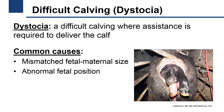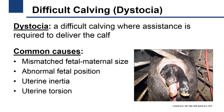Additional causes include an abnormal position of the calf, which is more common in mature cows; uterine inertia, which is when the uterus does not contract; and uterine torsion, also known as twisted uterus.